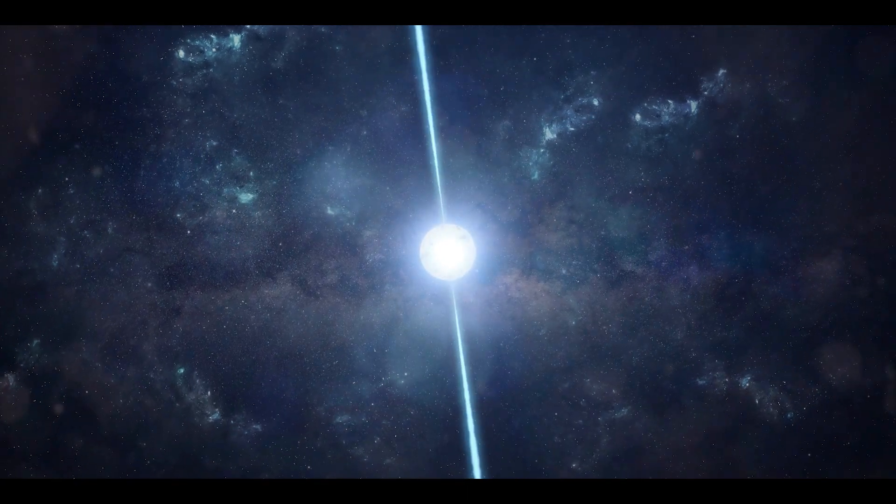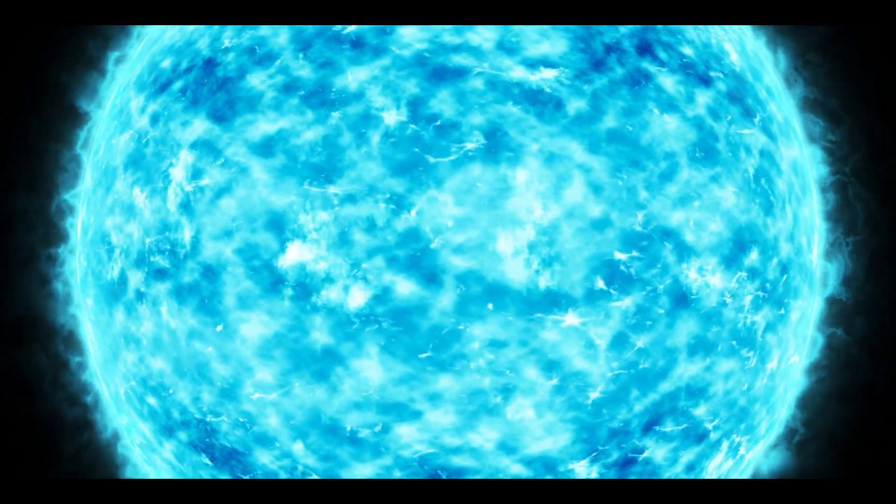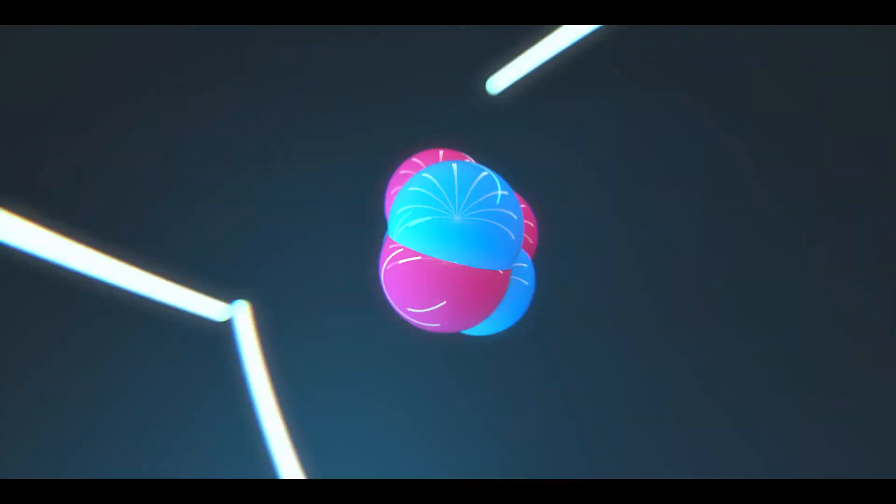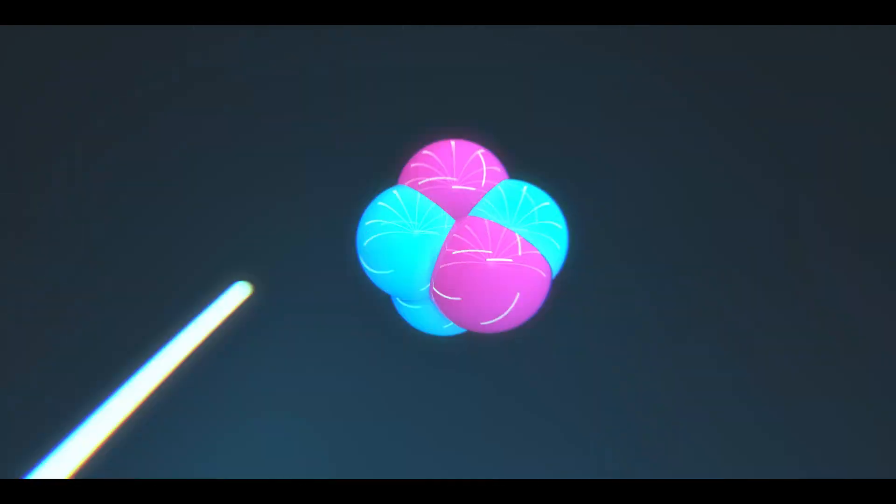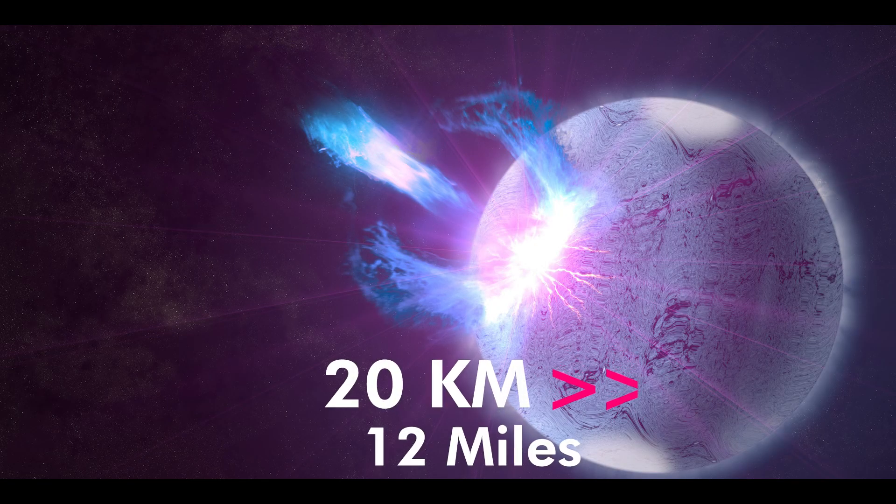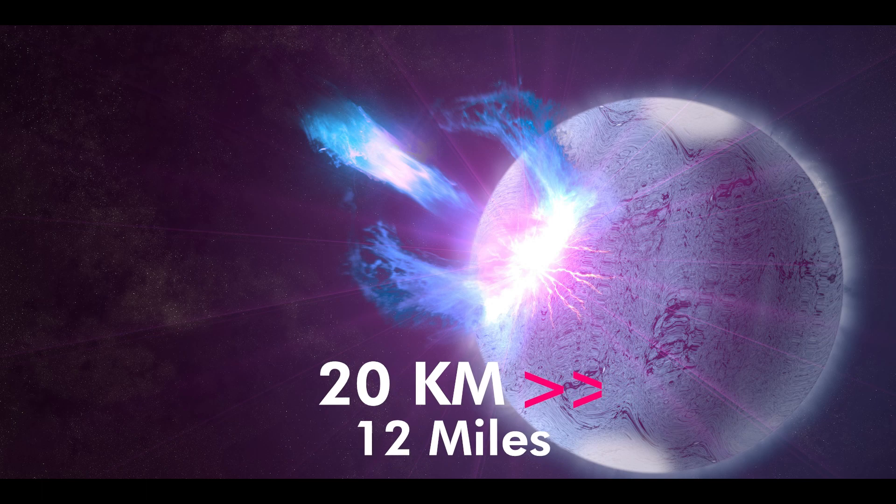A pulsar is a rapidly spinning neutron star. It is extremely dense, composed almost entirely of neutrons, and has a diameter of less than 20 km, or 12 miles.